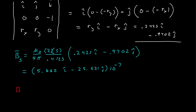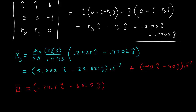The total magnetic field is the sum of both contributions. The 5-amp wire gives 5.882 i-hat minus 25.531 j-hat times 10⁻⁷, and the 4-amp wire gave negative 40 i-hat minus 40 j-hat times 10⁻⁷. Adding them together: negative 34.1 i-hat minus 65.5 j-hat times 10⁻⁷.